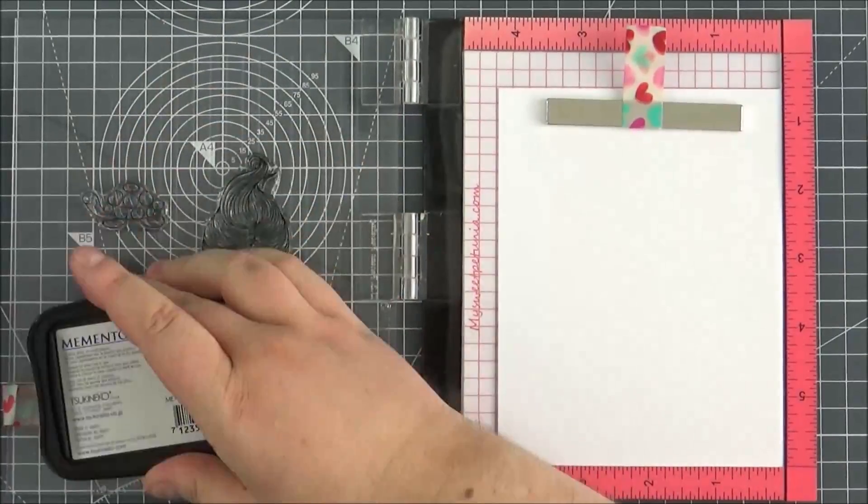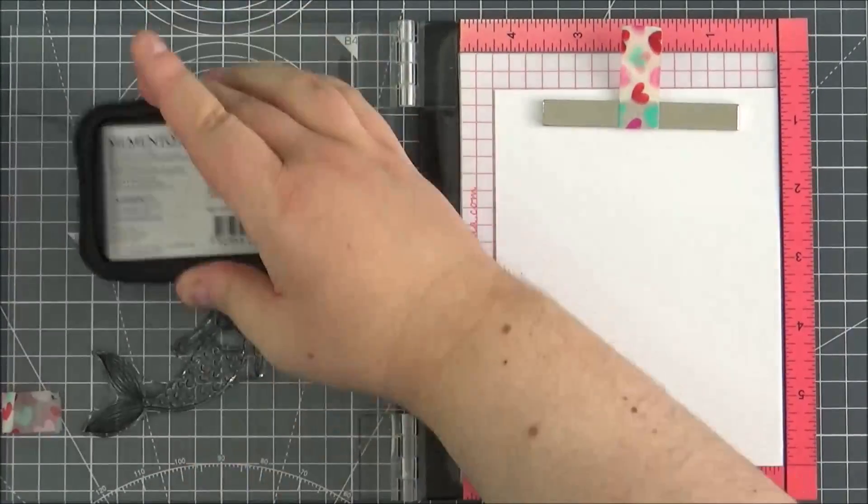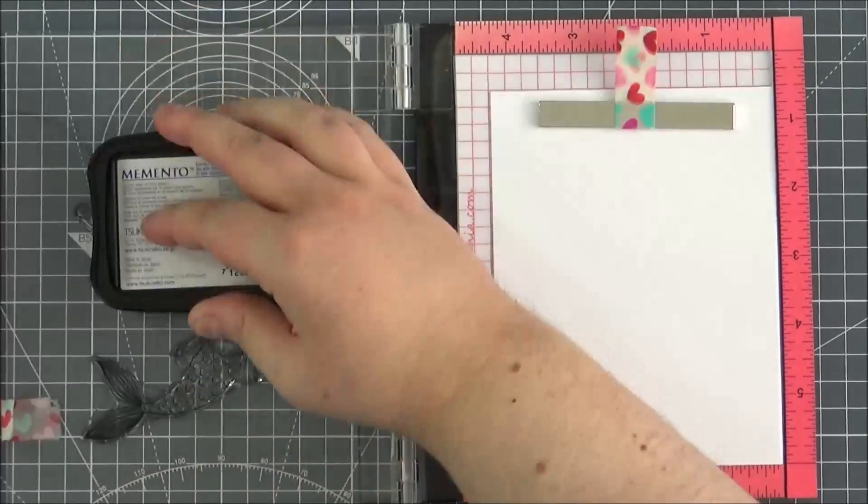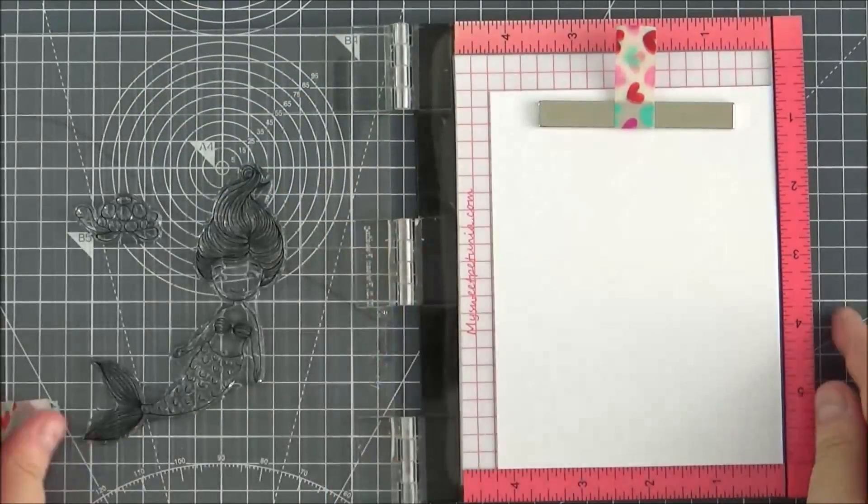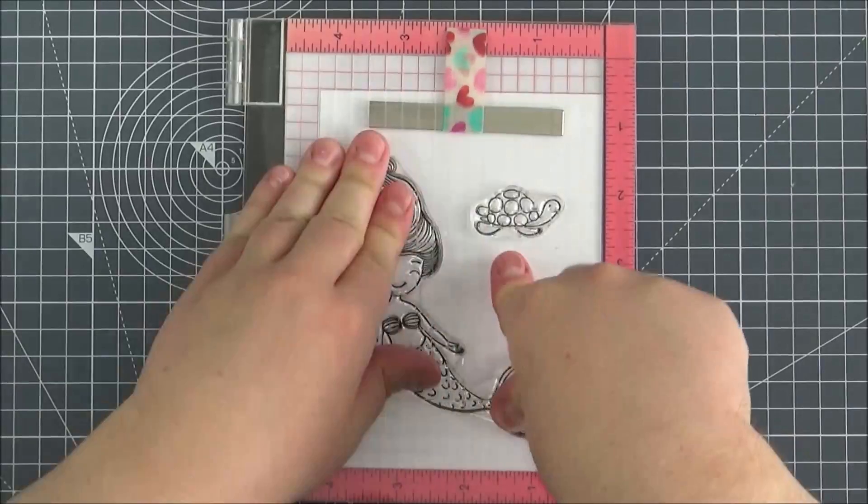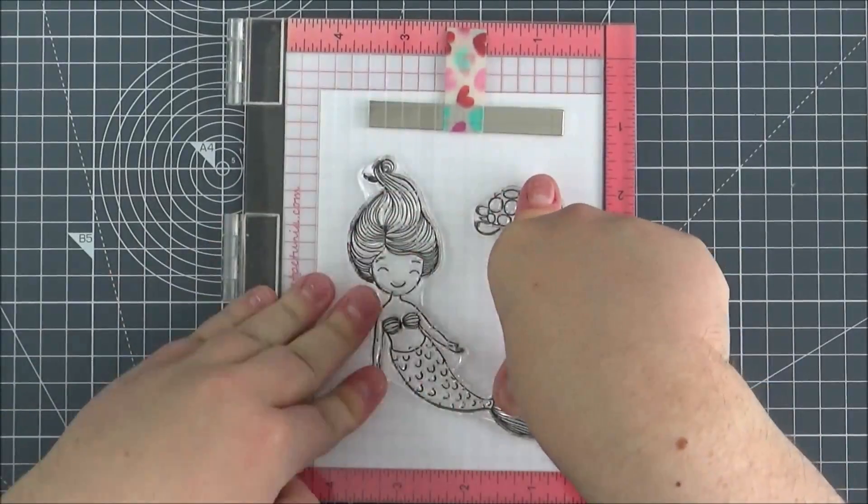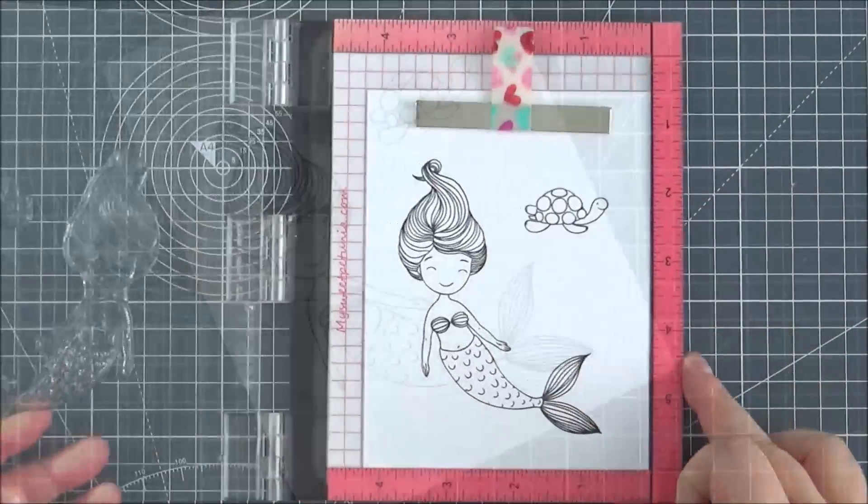Here I've got the Swimming By stamp set from Honey Bee Stamps in my Mini Misti because the image is quite large. I've got the turtle and the mermaid here. I ink that up with some Memento Tuxedo Black ink and press that down. Then I'm going to color the image with Copic markers.